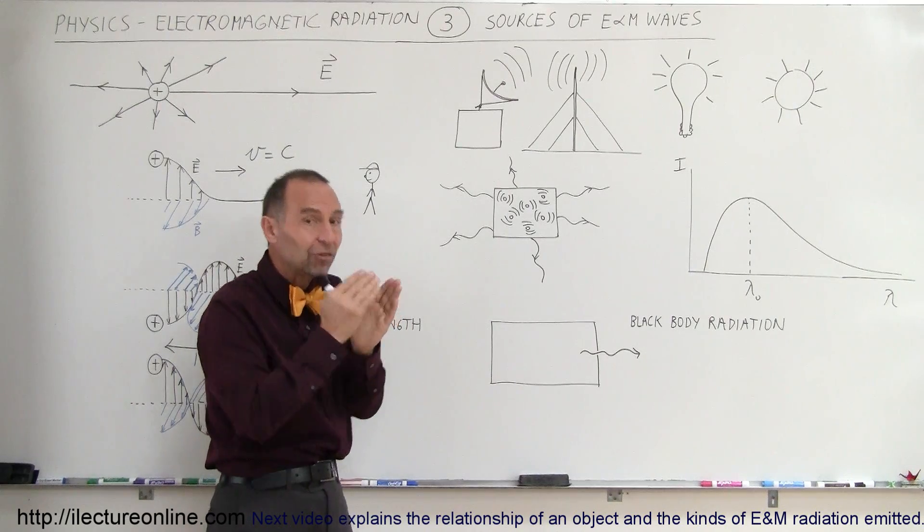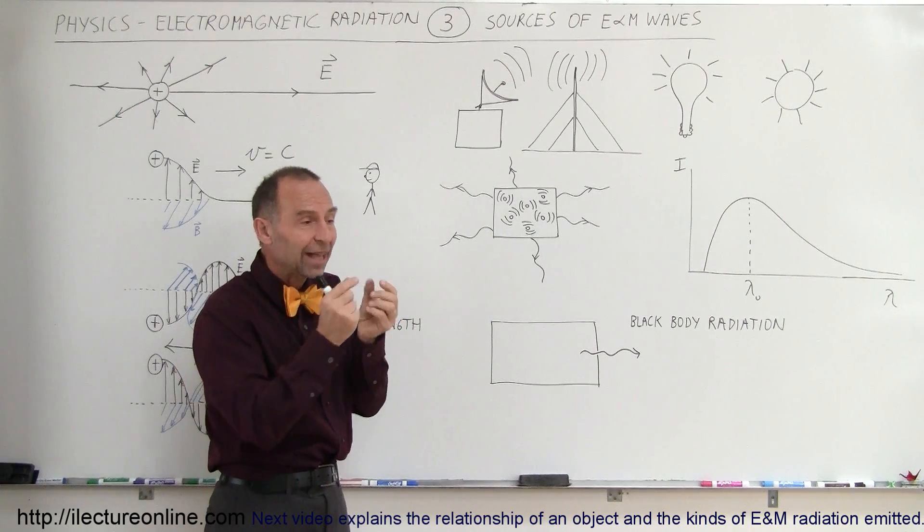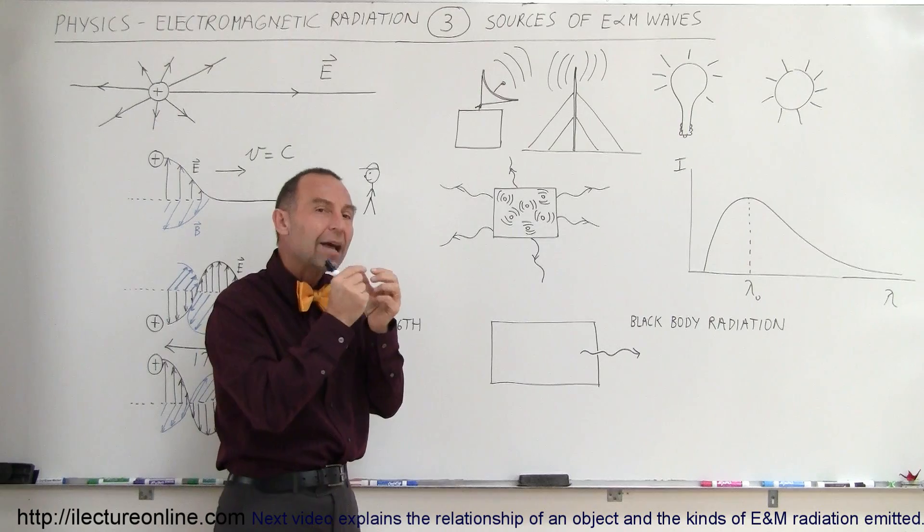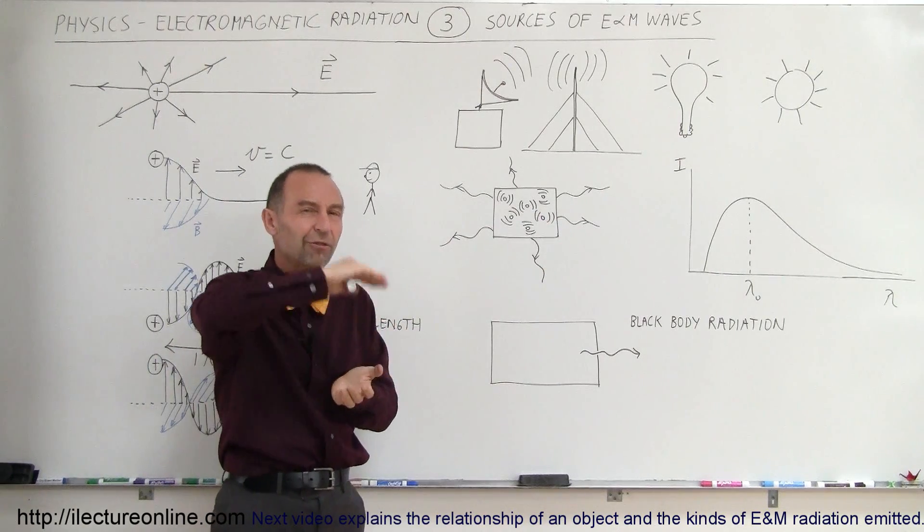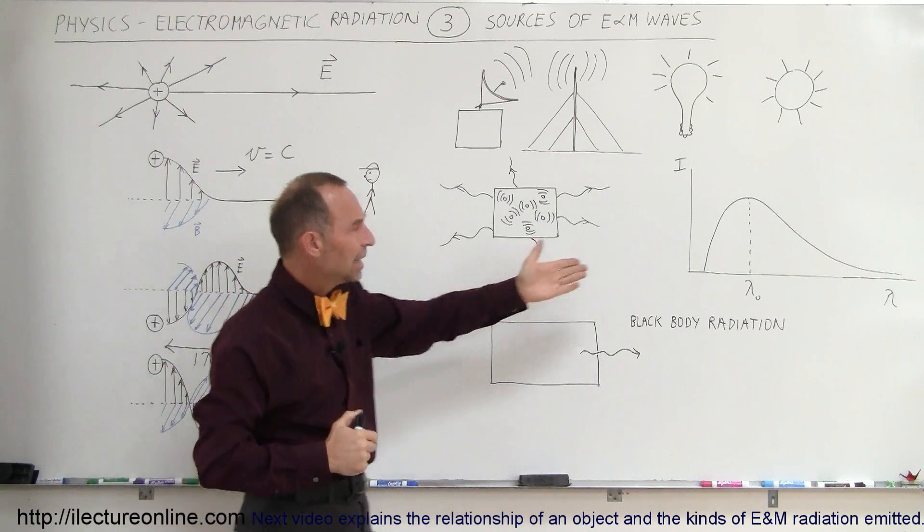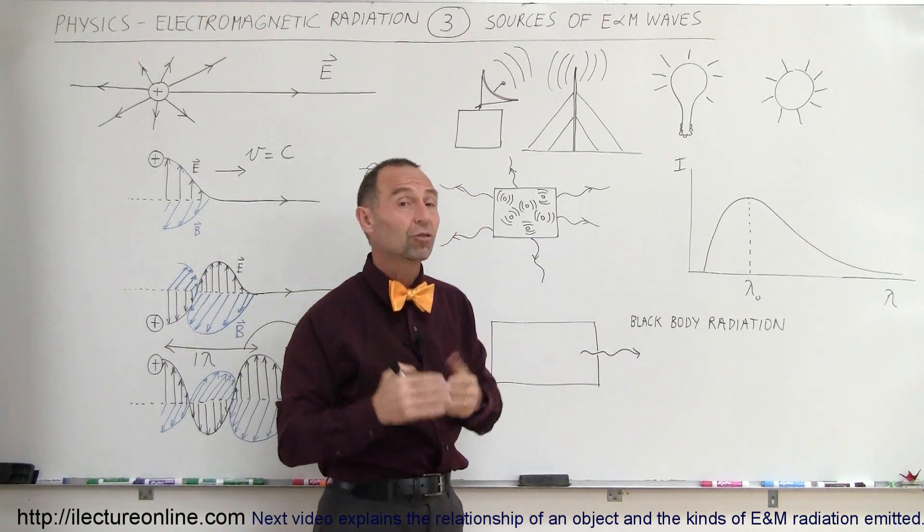Some have shorter wavelengths, some have longer wavelengths, and because of that, the photons, the small packages of energy that leave the object, will have various frequencies. There will be a frequency distribution.